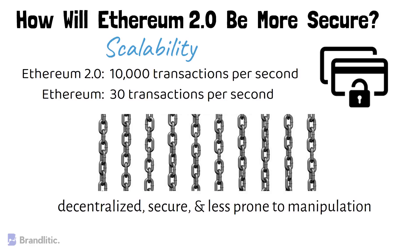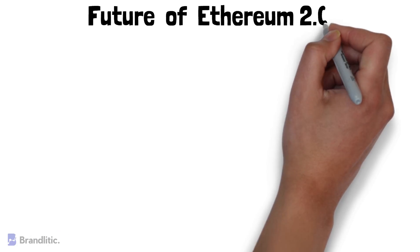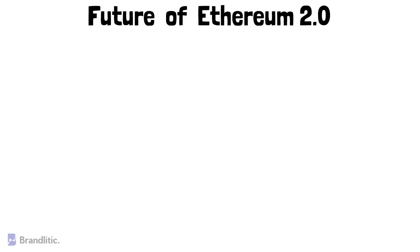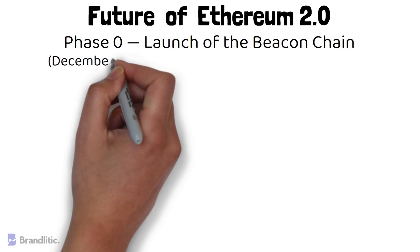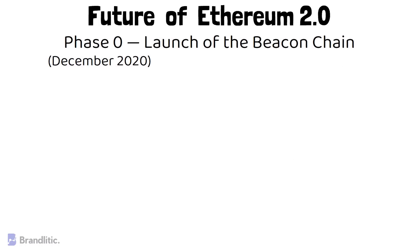What does the future of Ethereum 2.0 look like? Ethereum is the largest general-purpose blockchain in today's market since its launch in 2015, and many people are looking forward to the upgrade, which will roll out in the following phases. Phase 0 was launched in December 2020 with the implementation of the Beacon Chain.